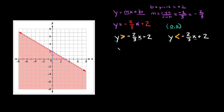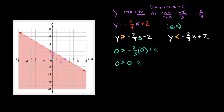Let's do the first inequality on the left. We have: zero is greater than negative two-thirds times zero, plus two. Simplifying, that's zero is greater than zero plus two, which gives us zero is greater than two. Is this a true statement? Is zero bigger than two? No, it's not — this is a false statement. Since this one gave us a false inequality, the other one should work.